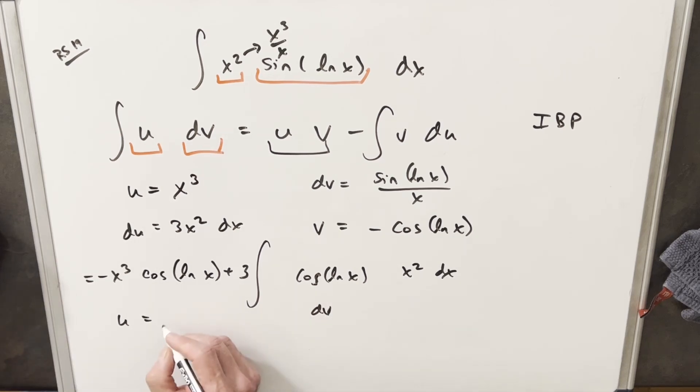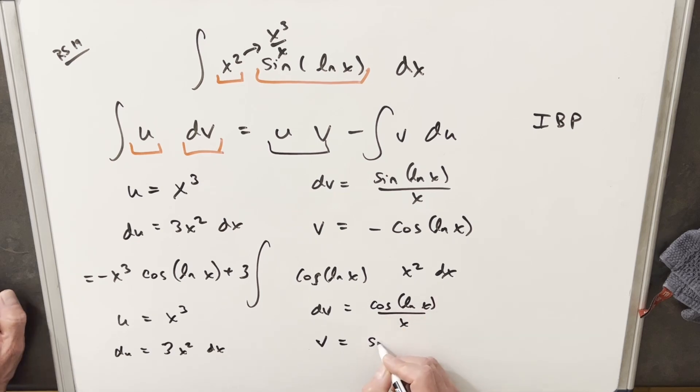We'll do basically the same thing. So for my u, I'm going to make it x cubed, and for my dv, I'm going to make this cosine ln x over x. Then here, we'll take our derivative, and again, we're going to get 3x squared. Again, like doing a substitution in our head when we integrate this, we're going to have sine ln x.